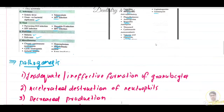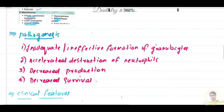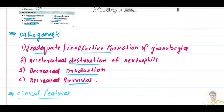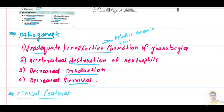Regarding pathogenesis, it can be categorized into four mechanisms: inadequate or ineffective formation of granulocytes, accelerated destruction of neutrophils, decreased production, and decreased survival. With regard to inadequate or ineffective formation of granulocytes, this can be due to bone marrow failure such as that occurring in aplastic anemia, various leukemias, and chemotherapeutic agents.